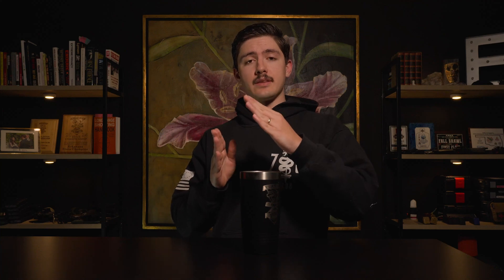Now, before you come at me in the comments, I know it's truly 1.047 inches, but for all practical shooting purposes it is best to round down and just use one inch for every hundred yards. Even at a thousand yards, this is only going to take you off half an inch. The key phrase here is 'for every hundred yards,' because since we're talking about angles instead of arbitrary distances, the difference the angle creates will change in size based on distance. So for example: half an inch at 50 yards, two inches at 200 yards, and 10 inches at a thousand yards are all represented by one MOA.